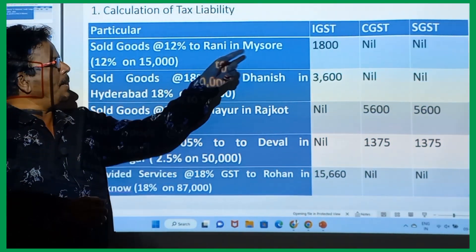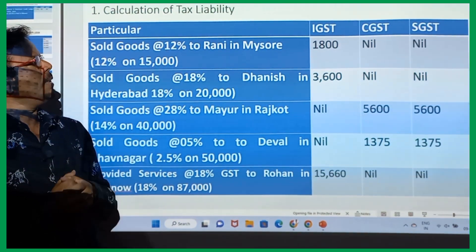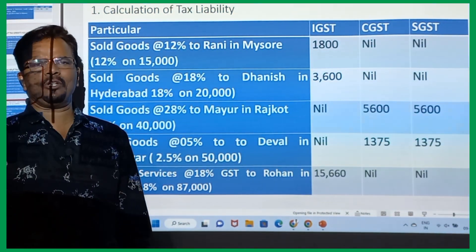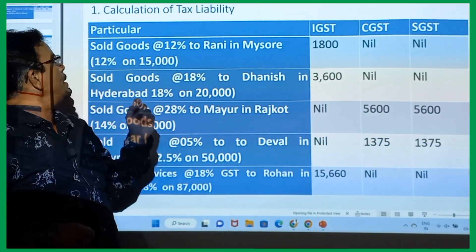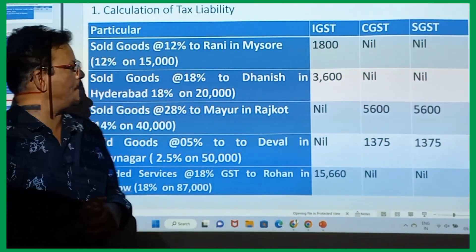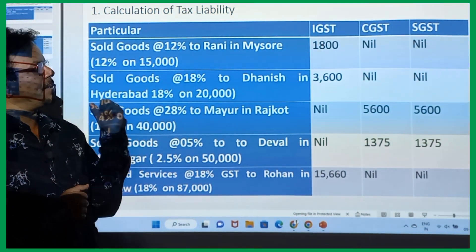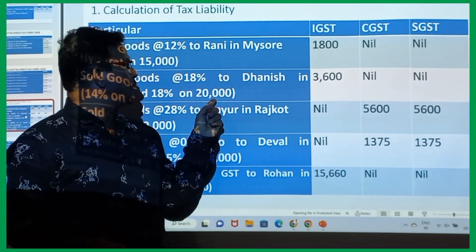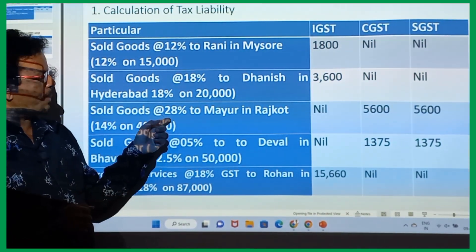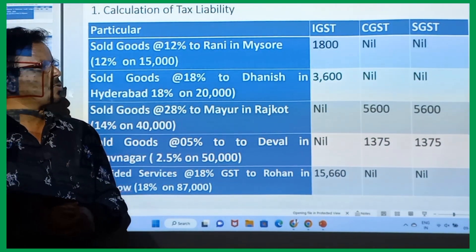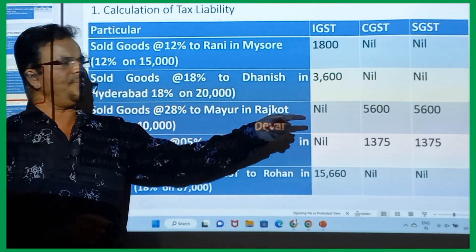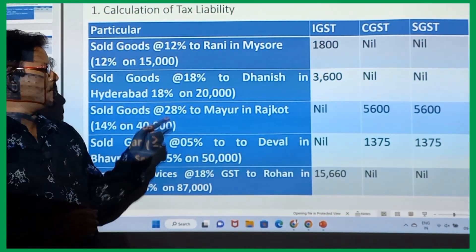Sold goods to Rani at 12% — Mysore is outside Gujarat, so we charge IGST: 12% on 15,000 = 1,800. CGST: nil, SGST: nil. Sold goods at 18% to Danish in Hyderabad — again outside Gujarat, so IGST: 18% on 20,000 = 3,600. CGST: nil, SGST: nil. Sold goods at 28% to Mayur in Rajkot — within Gujarat, so CGST and SGST: 14% each = 5,600 and 5,600.